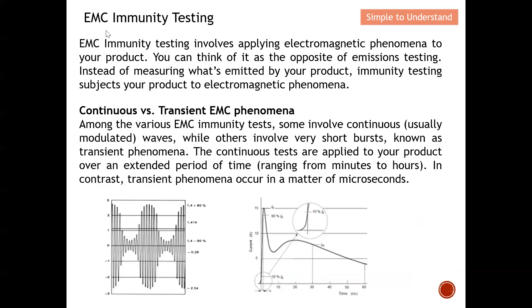Let me quickly define what EMC immunity tests are. EMC immunity testing involves applying electromagnetic phenomena to your product. You can think of this as the opposite of emissions testing. Instead of measuring what's emitted by your product, immunity testing subjects your product to electromagnetic phenomena to determine whether it can still function acceptably.